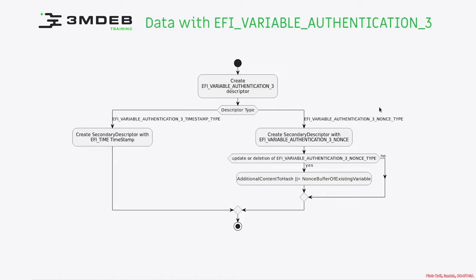In the case of the nonce type, we have to create a secondary descriptor which will be attached right after the authentication tree descriptor. This secondary descriptor is the authentication tree nonce descriptor. In the case of updating or deleting the authentication tree nonce type, we have to provide a nonce buffer of the existing variable for hashing purposes.